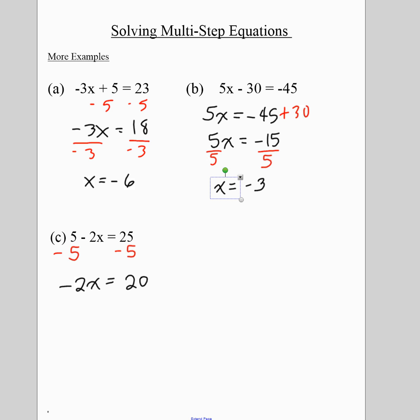Then ask yourself, how do I get rid of multiplying by negative 2? You divide by negative 2. If you got that one right, excellent job. This is the hardest one that you're going to get with multi-step equations. Next year in grade 8, they get more complicated. But this is about as complicated as it's going to get in grade 7.